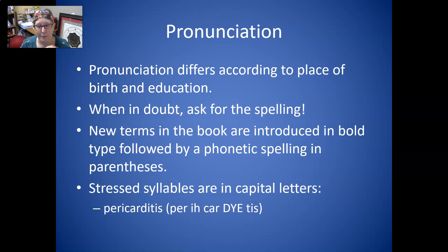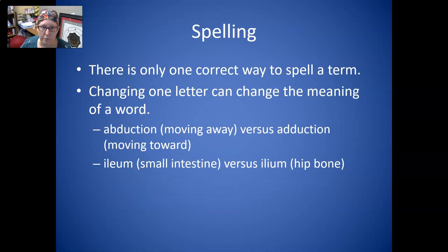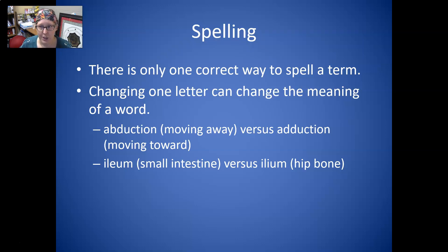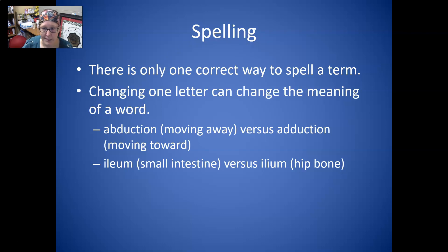For example, with pericarditis, the 'di' is capitalized, meaning that's where the emphasis is when you pronounce the word. There is only one correct way to spell a term, even if there are several ways to pronounce it depending on geographical location or background. Changing one letter can change the meaning entirely. For example, abduction, which means moving away, is different from adduction, which means moving towards — just one letter difference. Ileum, which is small intestine, is not the same as ilium, which is hip bone — the only difference is between an I and an E. Spelling is really important in medical terminology.